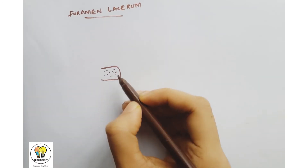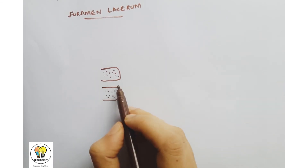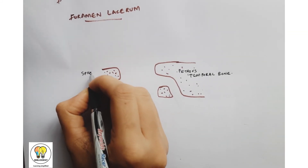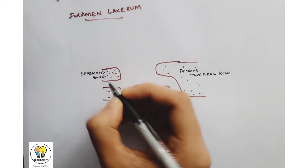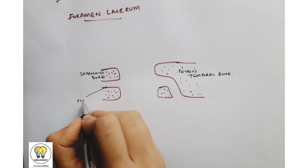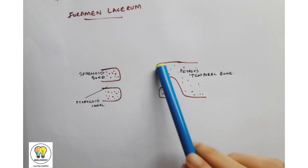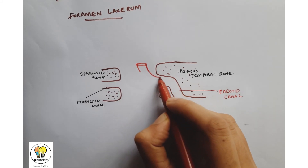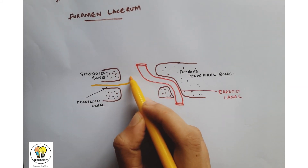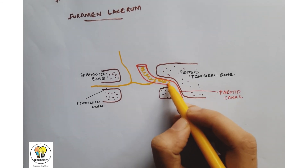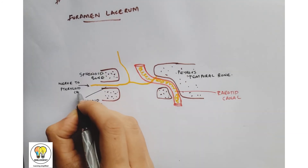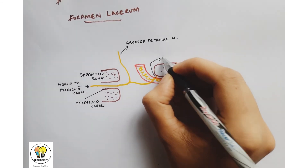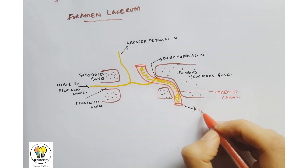Next is foramen lacerum. Here is the pterygoid process of the sphenoid bone, and this is the petrous temporal bone. Here is the pterygoid canal. The middle portion is the foramen lacerum, and this is the carotid canal. The internal carotid artery passes through it, along with the nerve to the pterygoid canal which has two branches — the greater petrosal nerve and the deep petrosal nerve. The internal carotid artery has a sympathetic plexus around it.